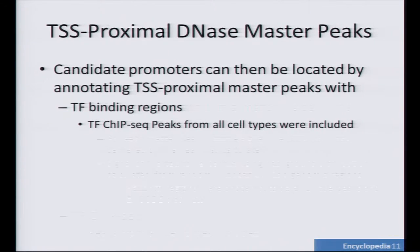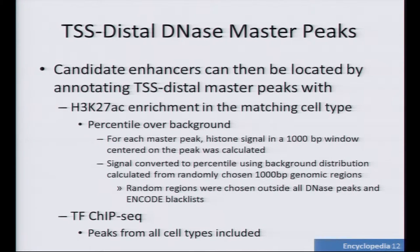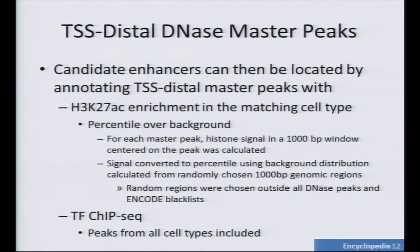For candidate enhancers, we do something similar but with one extra step. We're going to use the distal peaks, and we're going to annotate them with TF peaks. But we're also going to look at H3K27ac enrichment. Given the master peak, we go into the H3K27ac signal file, look at a 1KB region, and compute the percentile of that signal over background — background being randomly chosen segments of that signal track, ignoring other locations with DNase peaks and the ENCODE blacklist. If this H3K27ac region is in the 95th percentile, we call that a candidate enhancer.